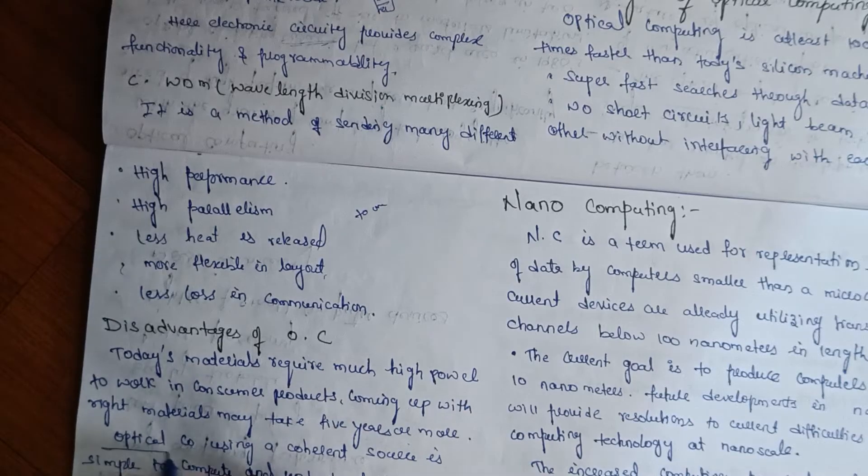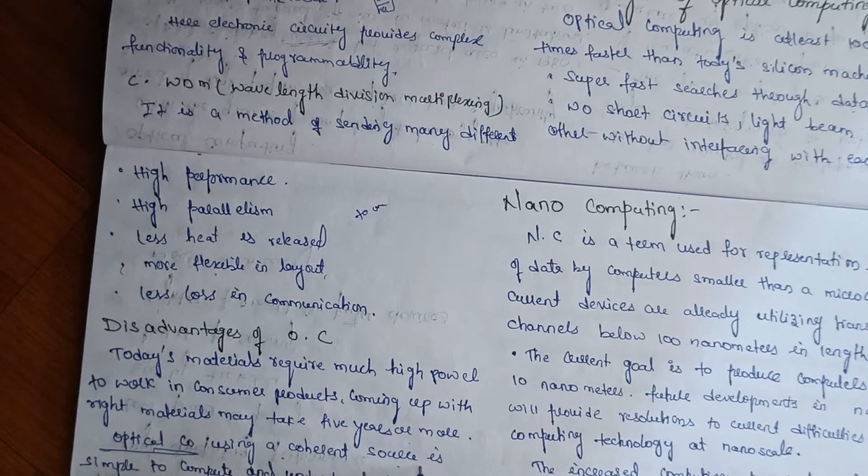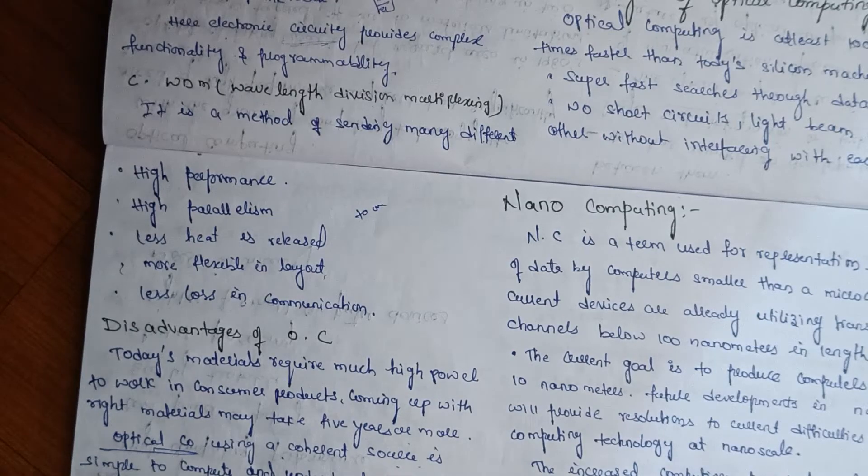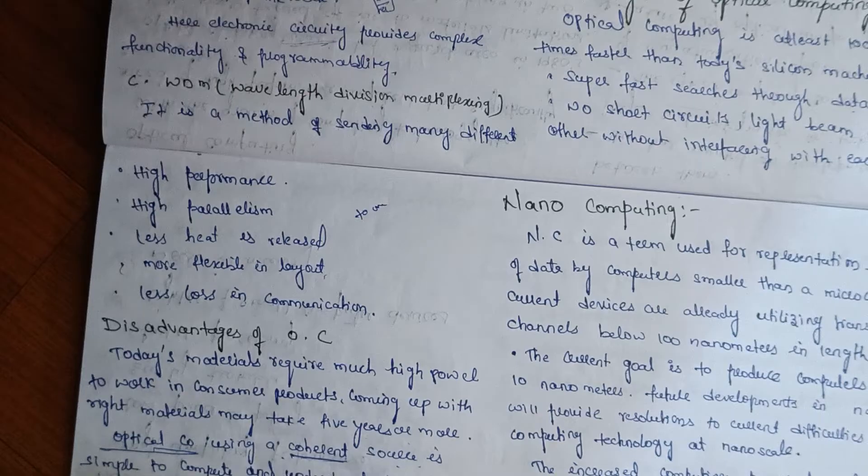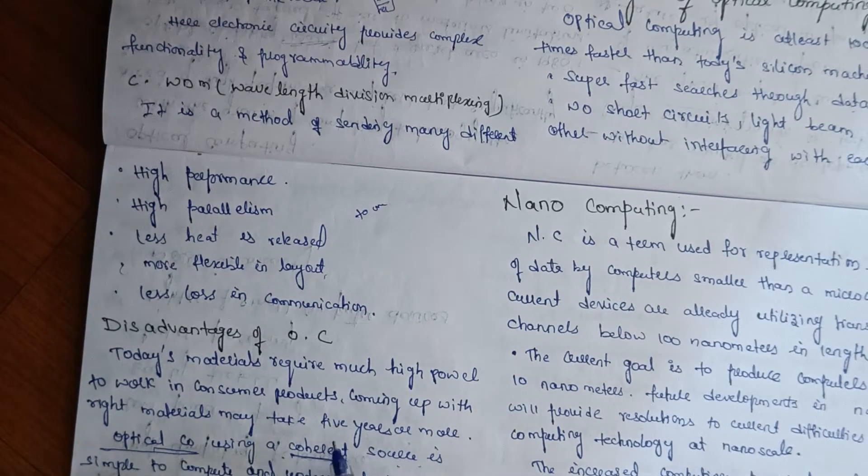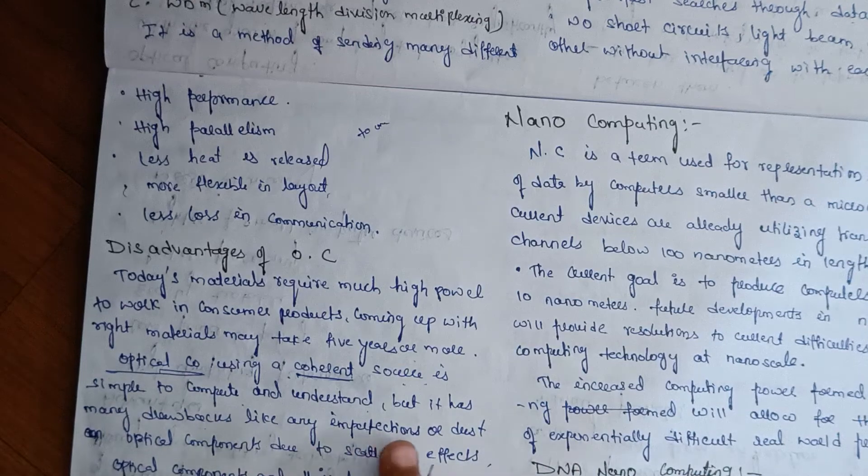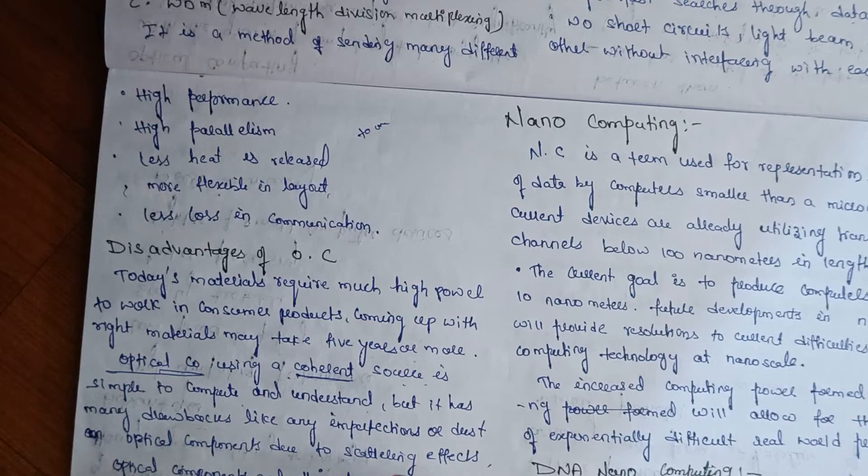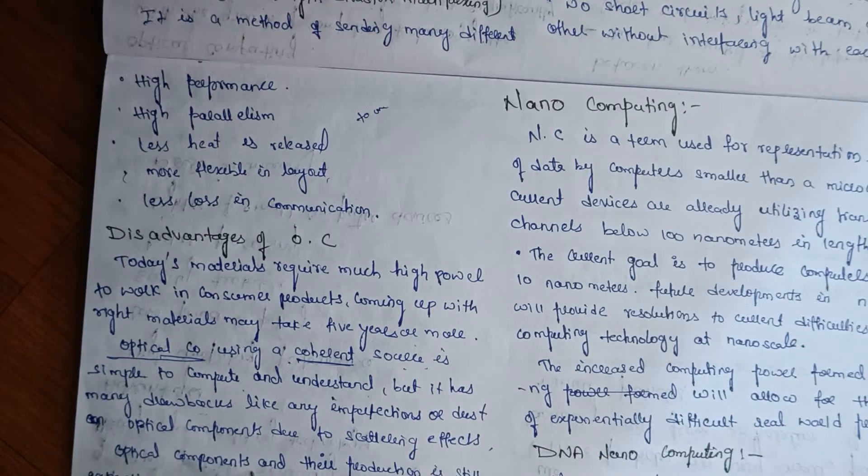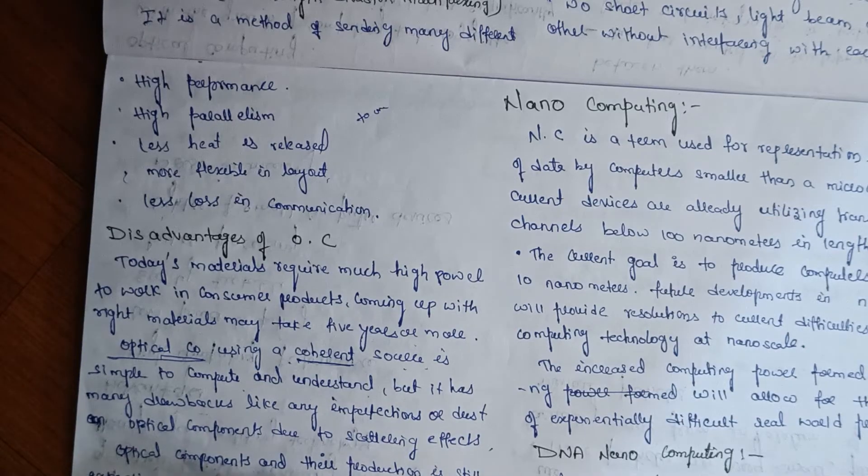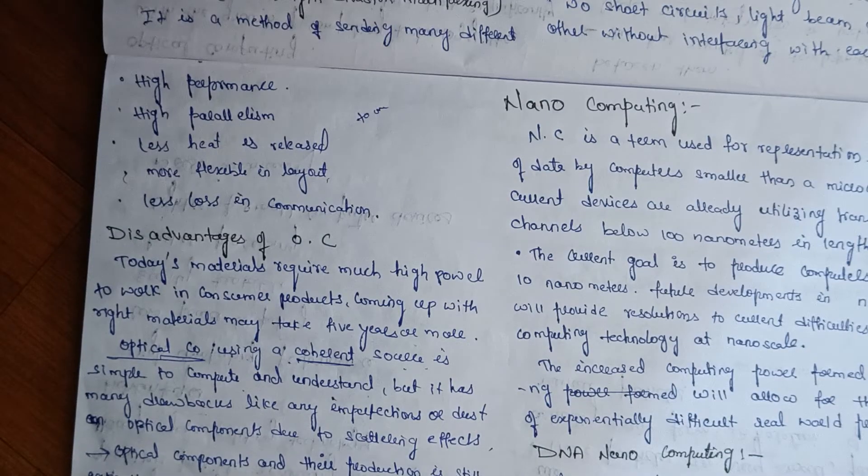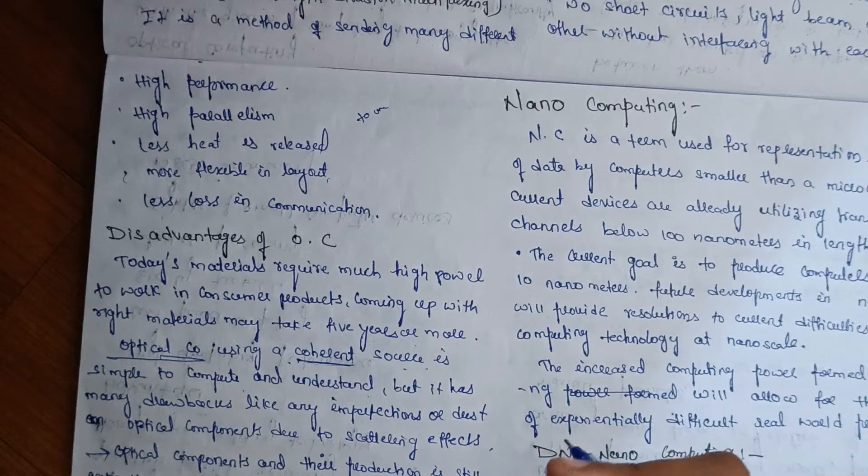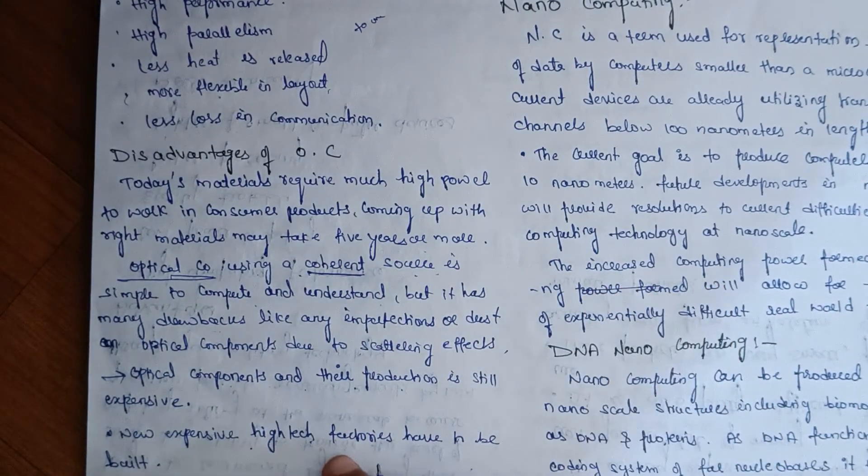Optical computing is using coherent sources. It is simple to compute and understand, but it has many drawbacks, like any implementation of dust on optical computers due to scattering effects. Optical components and their production is still expensive. New expensive high-tech factories have to be built.